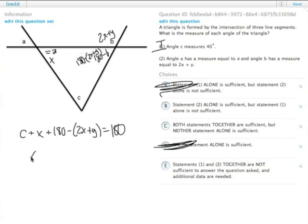The 180's cancel out, leaving X plus C minus 2X minus Y. The X's cancel, so C equals X plus Y.